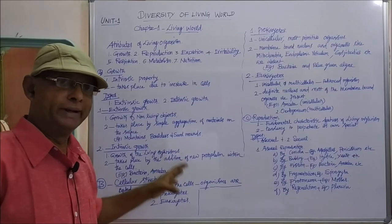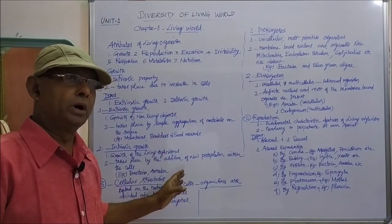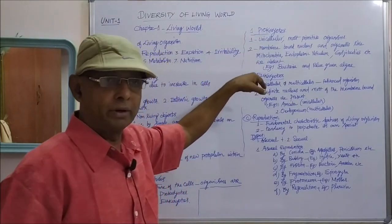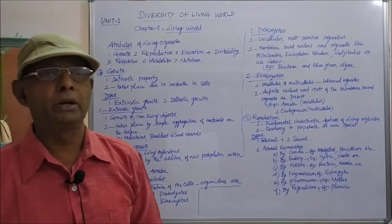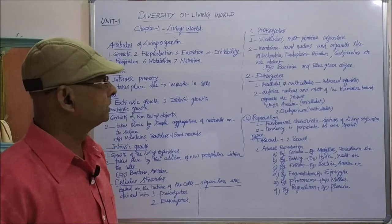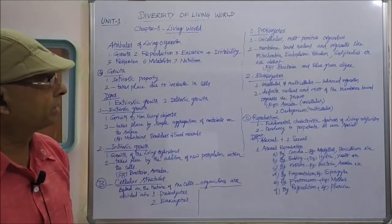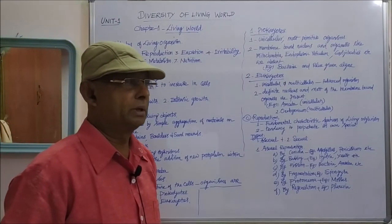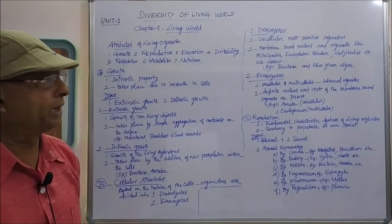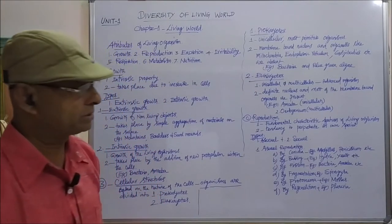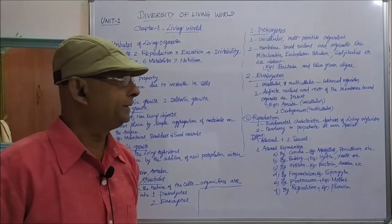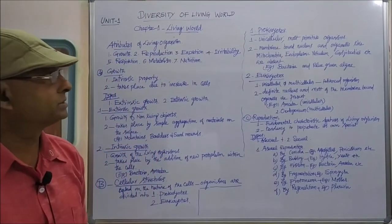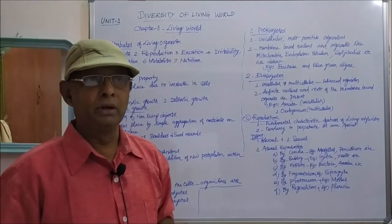Next, cellular structures. Based on the structure of the cell, living organisms are classified into prokaryotic organisms and eukaryotic organisms. Prokaryotes are unicellular organisms and are the most primitive. They do not have a definite nucleus or membrane-bound cell organelles like mitochondria, endoplasmic reticulum, or Golgi bodies. Examples of prokaryotic organisms are bacteria and blue-green algae.